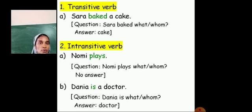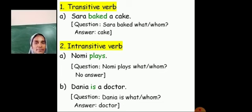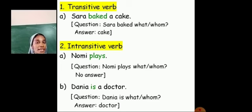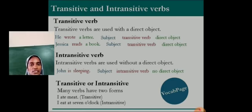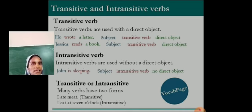Next, intransitive verb example: no answer from the verb, so it is called an intransitive verb. Next: Danya is a doctor. Danya is what? A doctor — we are getting an answer from this verb, so it is a transitive verb. He wrote a letter. He is the subject, wrote is the verb. He wrote what? A letter — that is the object.